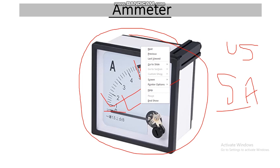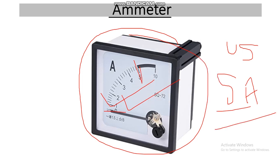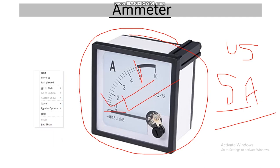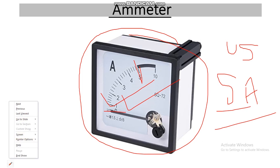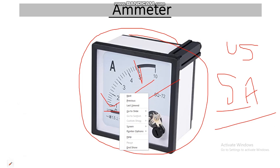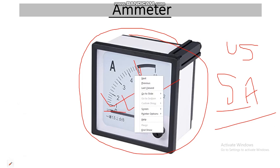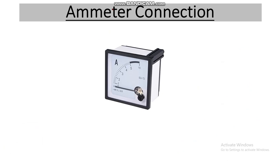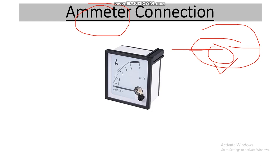Above 5 amperes, we have to use a CT, which is a current transformer. The unit of current is ampere. One important thing to remember: an ammeter is always connected in series in the phase wire or live wire to measure the current of that circuit.